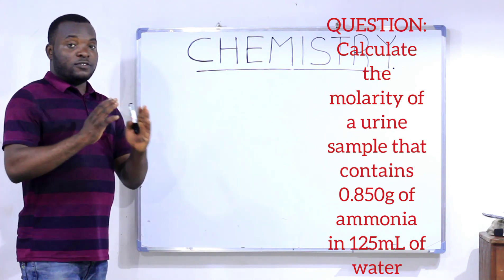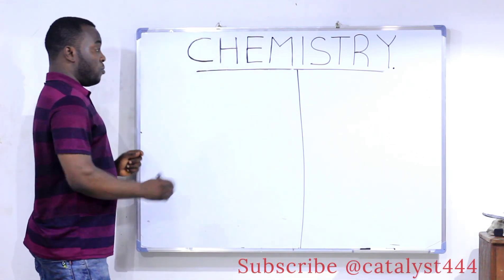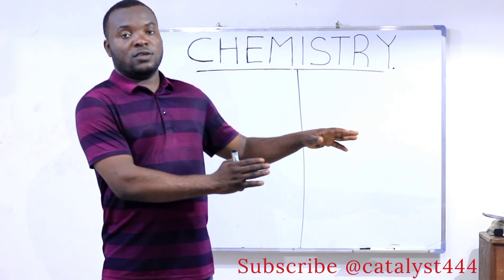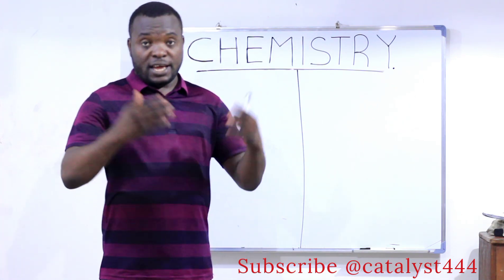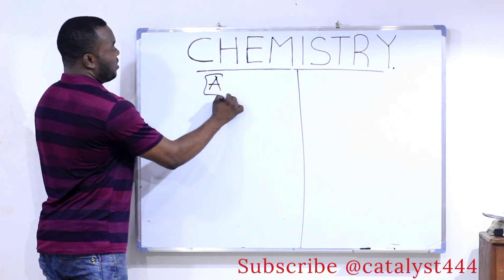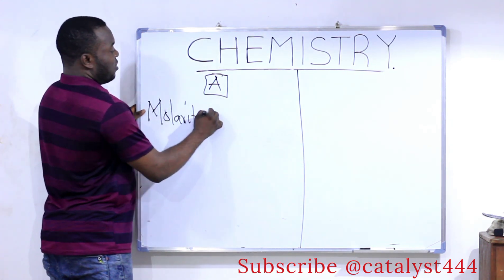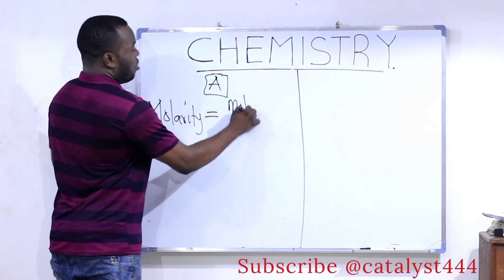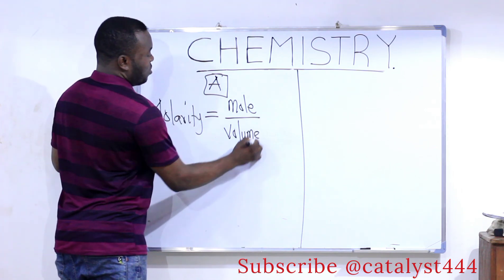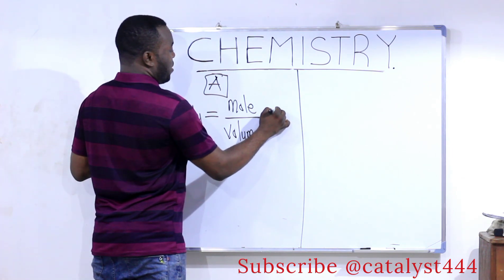There are two ways or two different formulas we are going to apply here to solve problems of molarity. I am going to give you two formulas. If Formula A does not suit you, you use Formula B. At the end, you will get the same answer. So let's see the formula. The first formula, which I call Formula A, says that molarity of a substance is equal to the mole of the substance divided by the volume multiplied by 1,000.